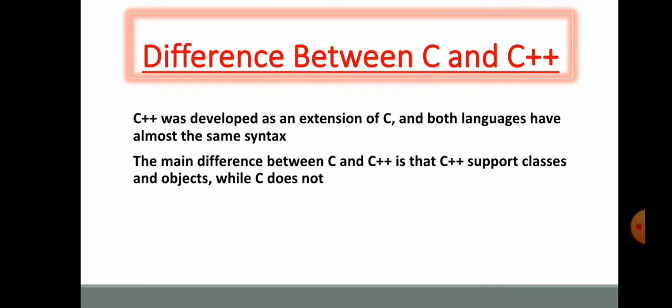If we talk about facts about C, so C was invented to write an operating system called UNIX. C itself is a successor of B language which was introduced around the early 1970s. The language was formalized in 1988 by American National Standard Institute, that is ANSI.